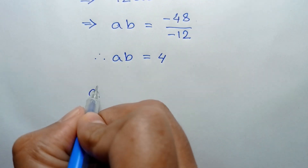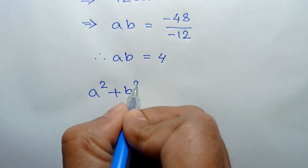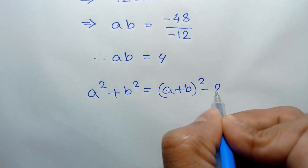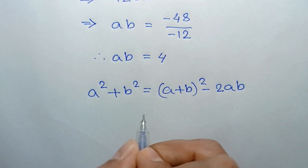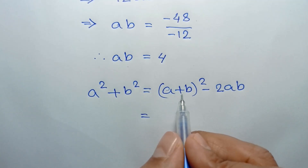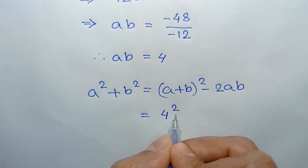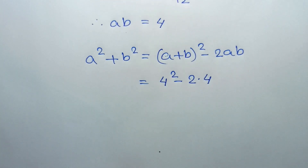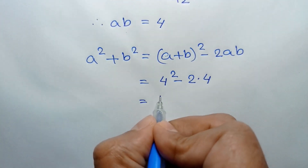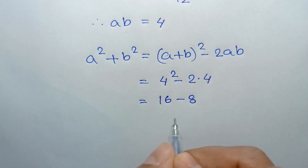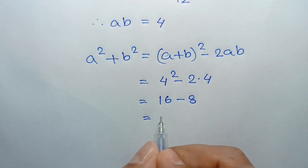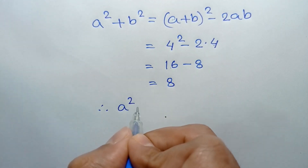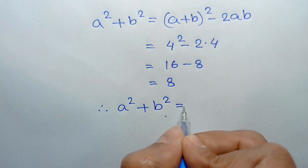Now, a square plus b square is equal to a plus b whole square minus 2 times ab. Substituting the value of a plus b equal to 4, we can write 4 square minus 2 times ab, where ab is 4. That gives 16 minus 8, which equals 8. So the value of a square plus b square is equal to 8.